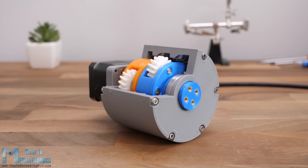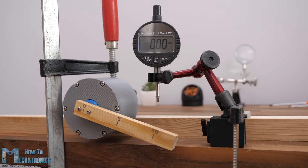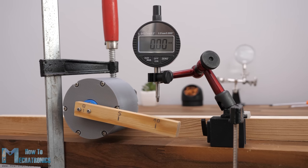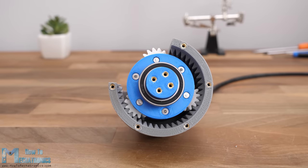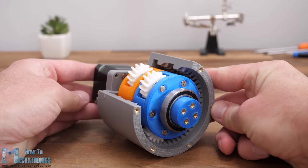At the end of the video we will also do some backlash and torque tests to see how well it can perform being a 3D printed gearbox. A planetary gear set is a unique type of gearing system which provides high torque and high efficiency in a compact design.